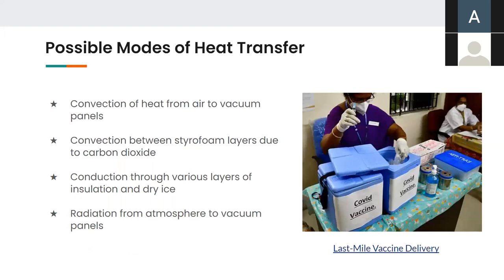Now, moving on to the possible modes of heat transfer in our case. The first possible mode of heat transfer is convection of heat from air to vacuum panels. The other mode considered is convection between styrofoam layers due to carbon dioxide, which is produced when our coolant dry ice sublimates after a particular point of time. The third possible mode of heat transfer is conduction through various layers of insulation and dry ice while it's solid. And the last mode of heat transfer is radiation from atmosphere and outside walls of the vehicle to vacuum panels. The last mode of heat transfer is considered to be negligible and is proved further in detail.